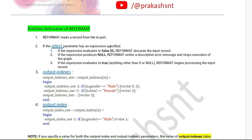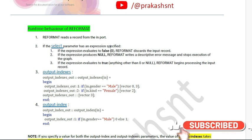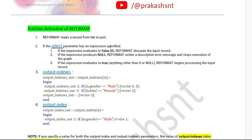Now we will discuss the runtime behavior of the reformat component — this determines which parameter should execute in sequence. First, reformat reads the record from input. Second, the select parameter decides which records come to the reformat component and which to discard, using a filter-type expression. If false, all records are discarded and you cannot capture them. If true, the record comes to reformat. If the expression produces null, it will write an error and your job will fail.